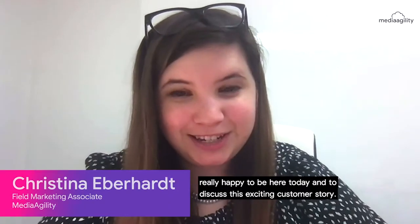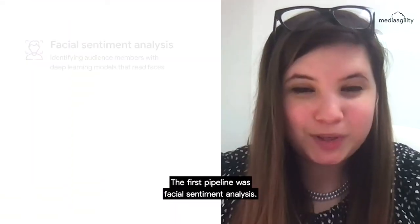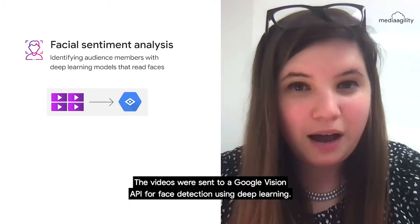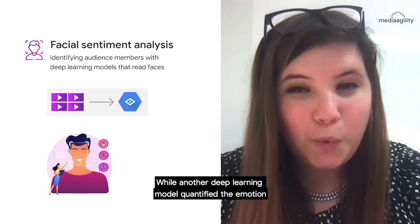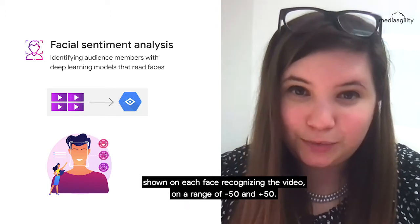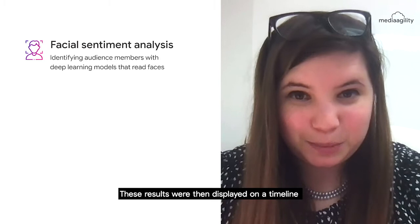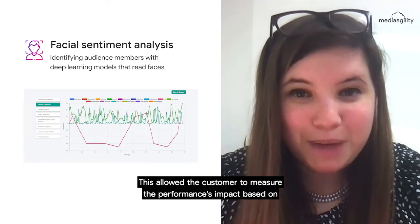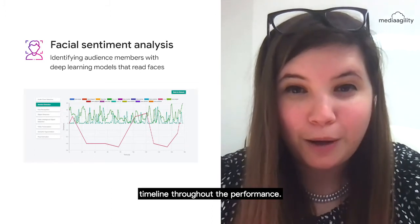Really happy to be here today and to discuss this exciting customer story. So as mentioned, the MVM had two pipelines. The first pipeline was facial sentiment analysis. The videos were sent to a Google Vision API for face detection using deep learning, while another deep learning model quantified the emotions shown on each face recognized in the video on a range of negative 50 to positive 50. These results were then displayed on a timeline showing the various emotions and their intensities, allowing the customer to measure the performance's impact based on their intended emotional timeline versus the audience's actual emotional timeline throughout the performance.